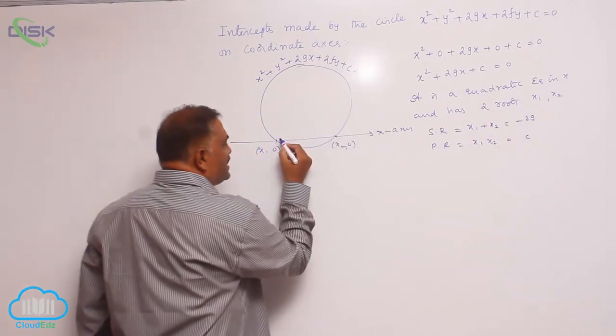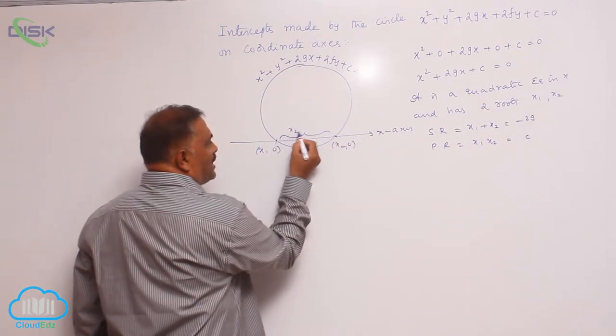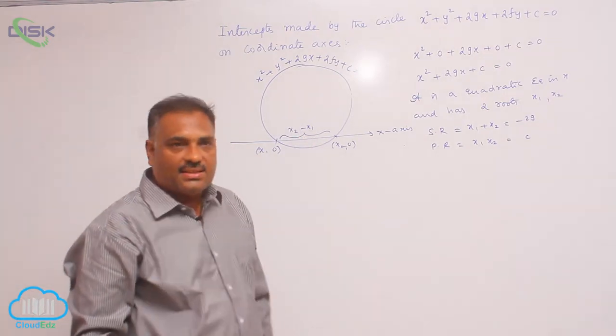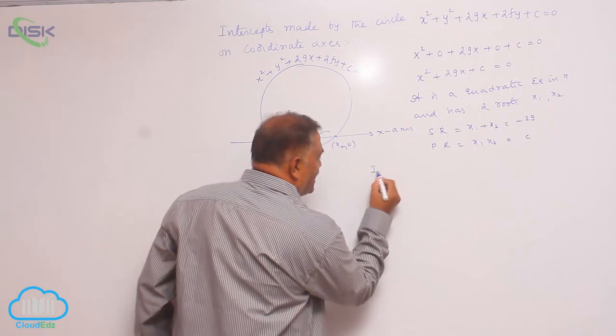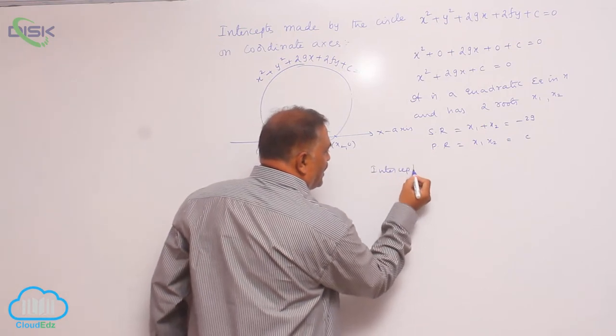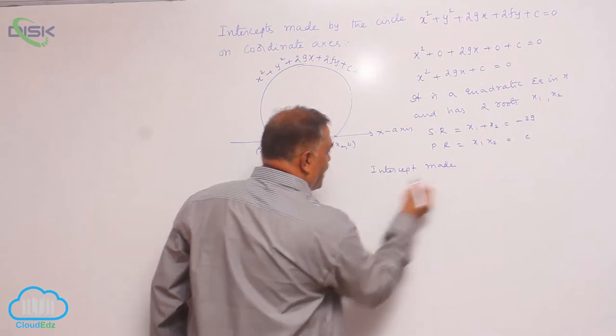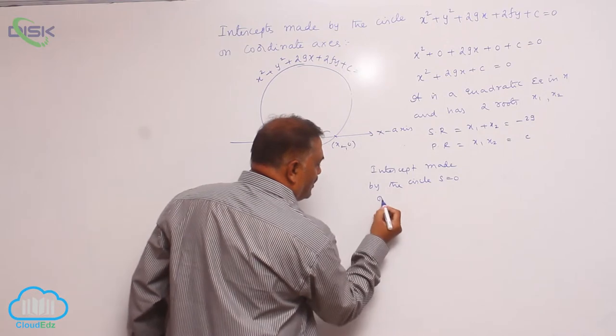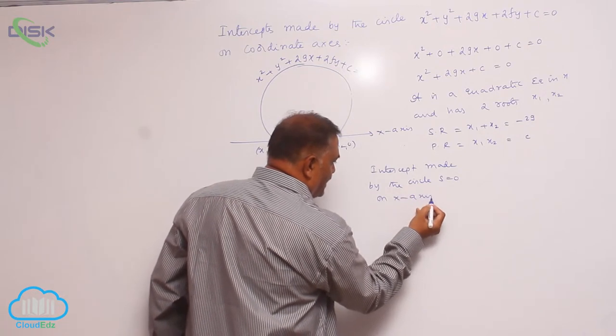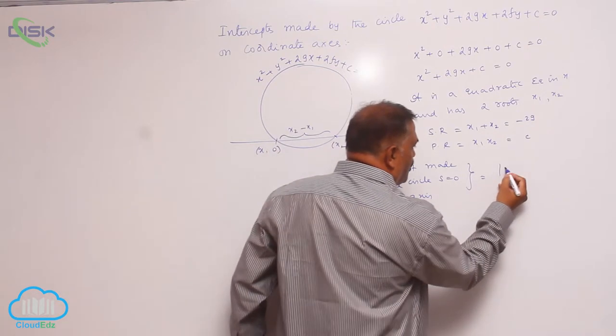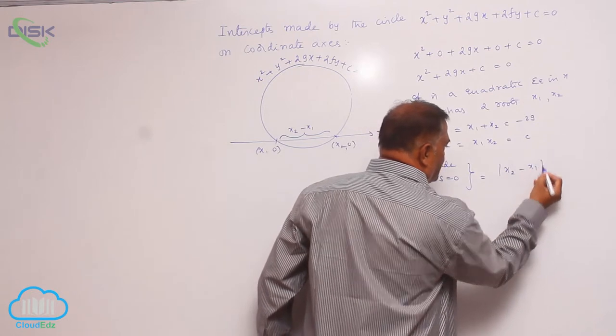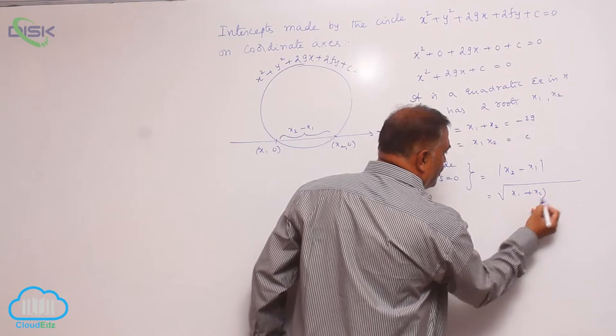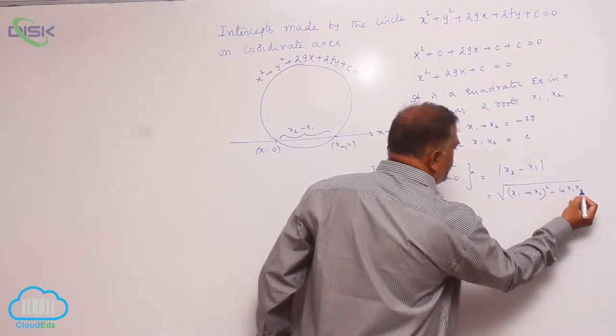The intercept made by the circle on the x-axis is |x₂ - x₁|, which equals √[(x₁ + x₂)² - 4x₁x₂].